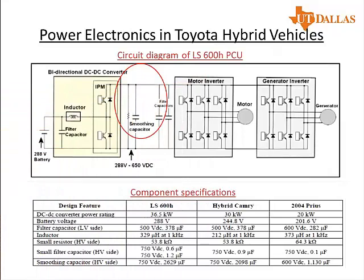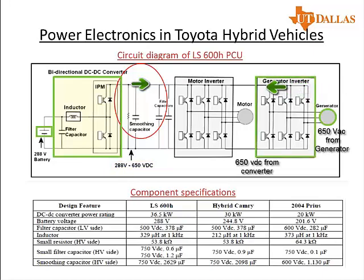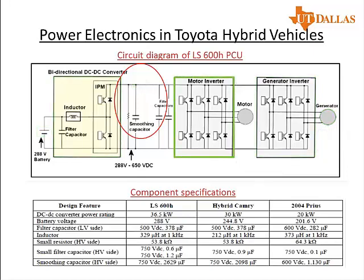In this diagram, for the Lexus, the 288 volt battery voltage is boosted to 650 volts DC on one side. On the other side, an engine drives the generator, which provides AC voltage, and that AC voltage from the generator is converted to 650 volts DC. So the power from the battery and the power from the generator driven by the engine are combined together in the DC link. That power is then converted into AC using the motor inverter to provide the propulsion power for the vehicle.